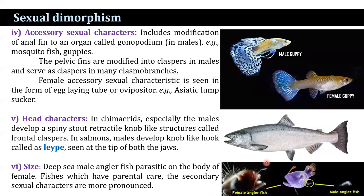In some cases, accessory sexual characters also develop. That includes the modification of the anal fin into an organ called the gonopodium, which helps in the transfer of sperm during mating — that is developed in the guppy. The pelvic fins are also modified into claspers in males in many elasmobranch species. The female accessory sexual character is seen in the form of the egg-laying tube, the ovipositor, best developed in the Asiatic bitterling.